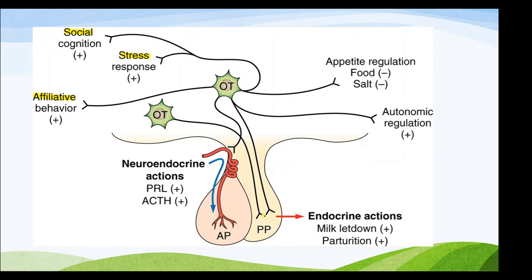Appetite regulation — for example, food and salt are negative inhibitors of oxytocin release. Autonomic regulation by the autonomic nervous system is also a positive effect on oxytocin release, synthesis, and release.